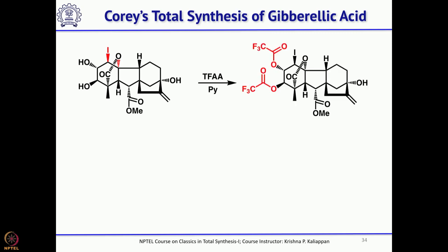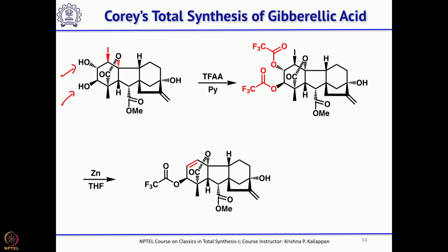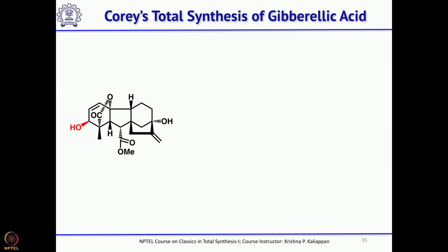What you need next is to get a double bond in gibberellic acid. Protect these two trans hydroxyls as trifluoroacetate, then treat with zinc. Zinc gives one electron and eliminates to give the corresponding double bond. So the lactone is formed, and you have the O-acetate. The ester should be hydrolyzed: 10% sodium bicarbonate in water hydrolyzes the trifluoroacetate to give the corresponding allylic alcohol.